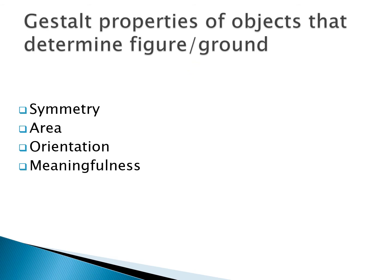Some of the Gestalt properties that have been found to help us figure out what's the figure and what's the ground are symmetry, smaller areas tending to be figures and larger areas more unformed ground, the orientation of lines or things, and then of course meaningfulness — how meaningful something is to us. Not all of these are going to work; not all of them have ever worked in any of my classes. I've been doing this since 2012 and I've kept them in because I think it's interesting.